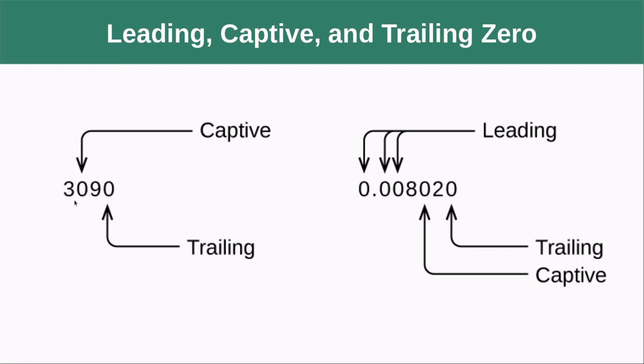So here is our captive zero. It's got two non-zero digits on either side. So that is a significant digit. This is a trailing zero and there's no decimal place. So it is to the left of the decimal place if we had written it. This is not a significant digit.